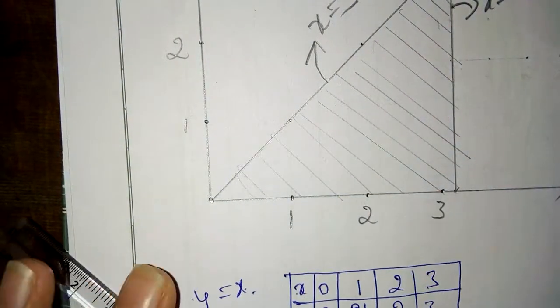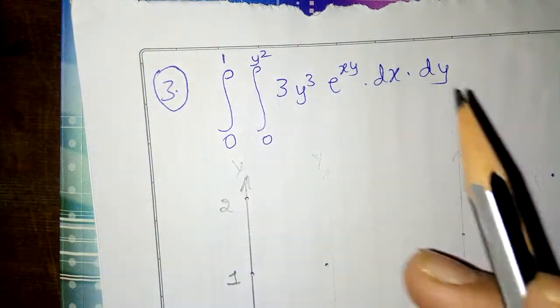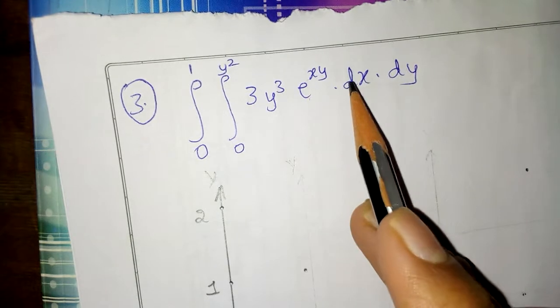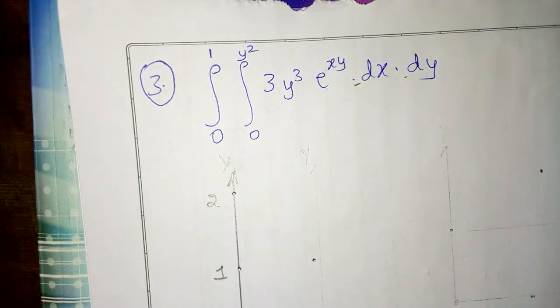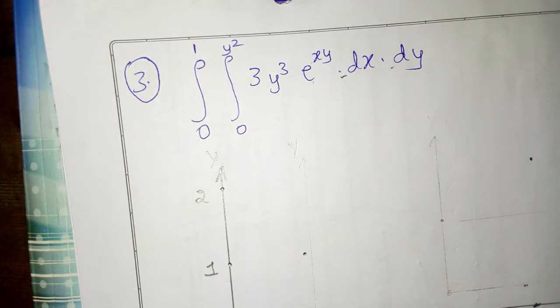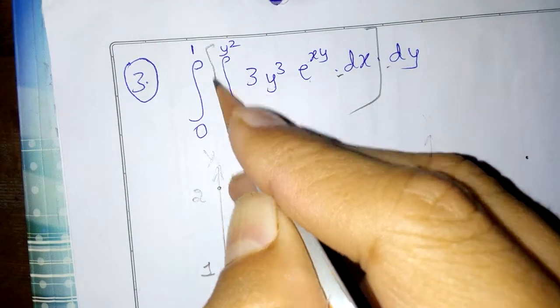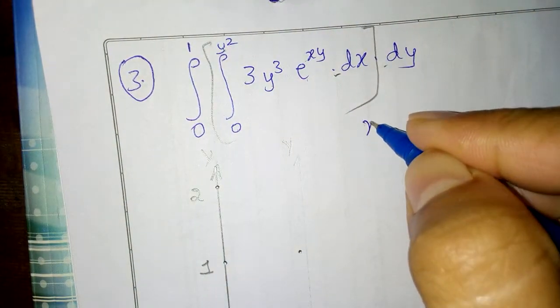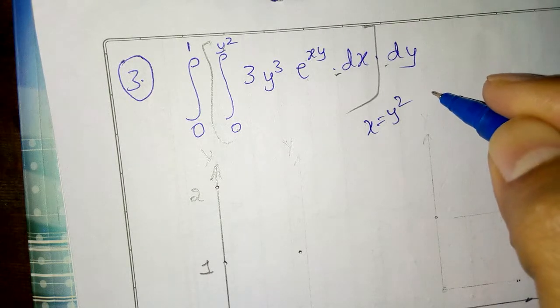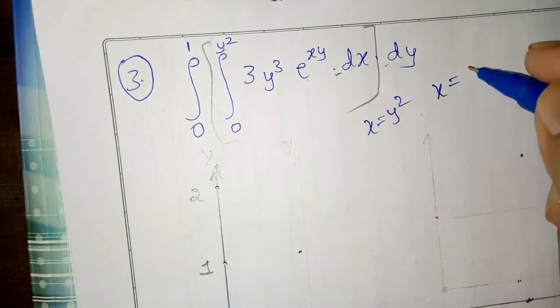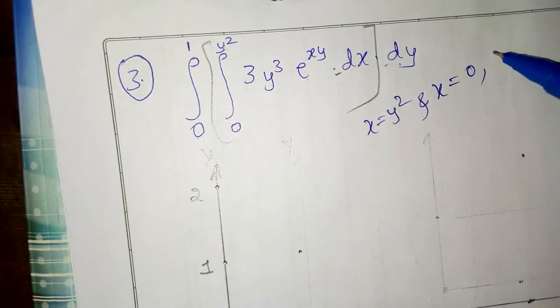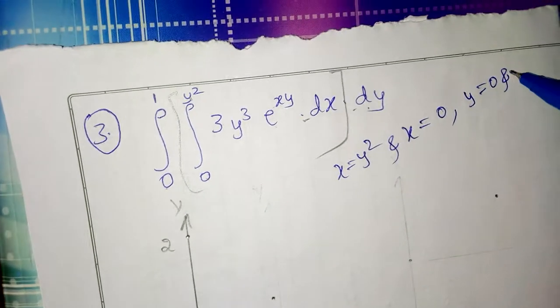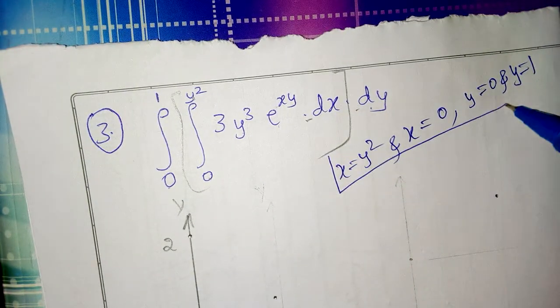The third problem is: integral from 0 to 1, 0 to y², of 3y³ e raised to xy, dx dy. Now we have to plot a graph for this given integral. They give dx first, so these are x limits: x is equal to y² and x is equal to 0. Similarly, these are y limits: y is equal to 0 and y is equal to 1. These are the four equations we need.